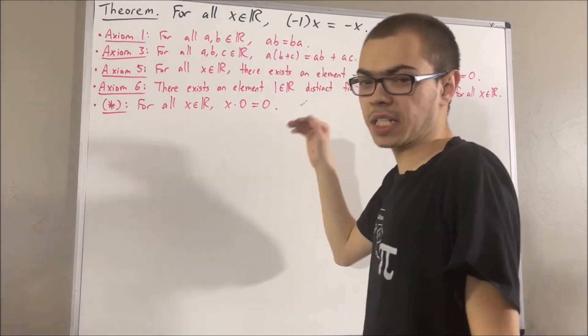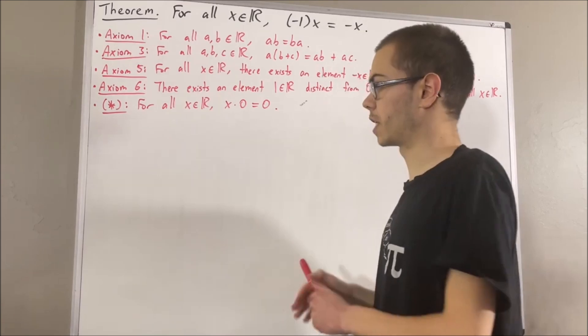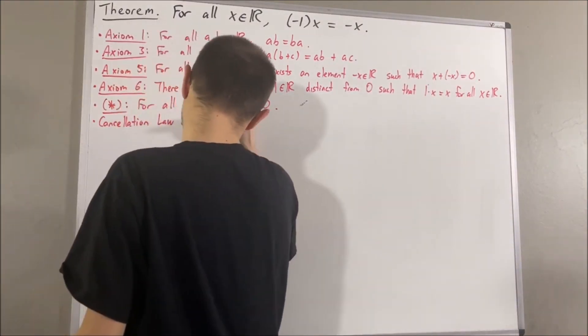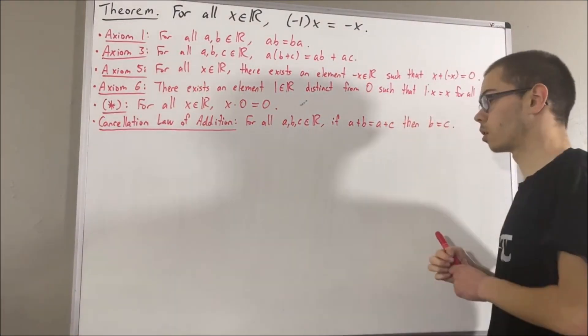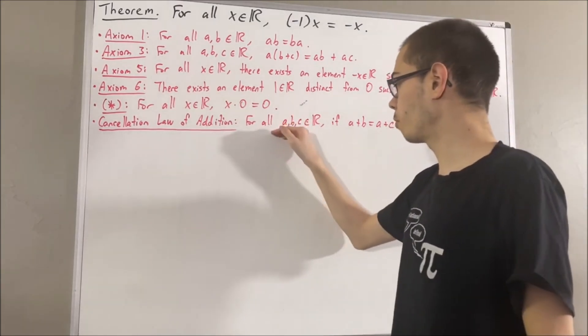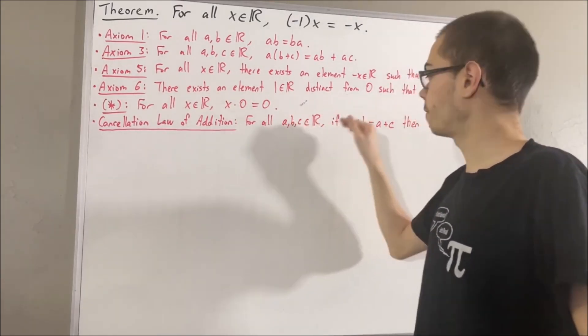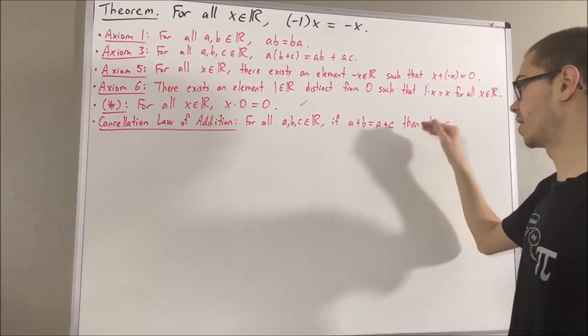And we've also proven the cancellation law of addition, which says the following: for all real numbers a, b, and c, if a plus b is equal to a plus c, then b is equal to c.